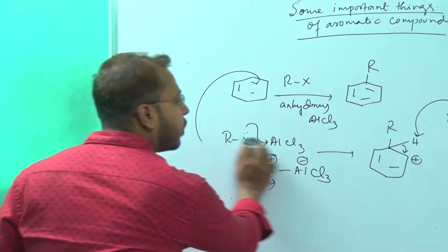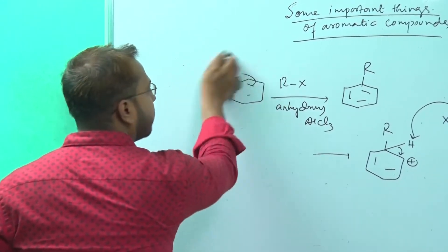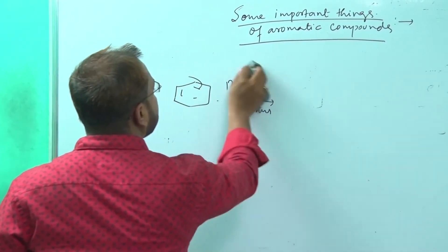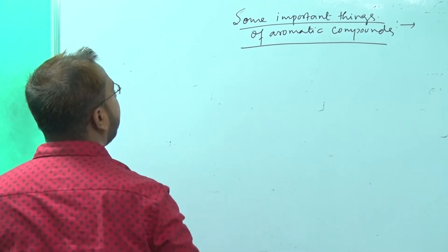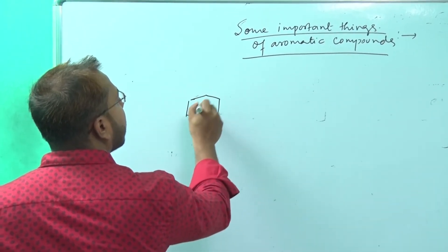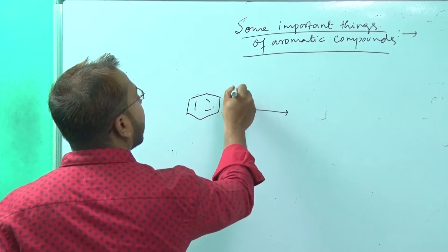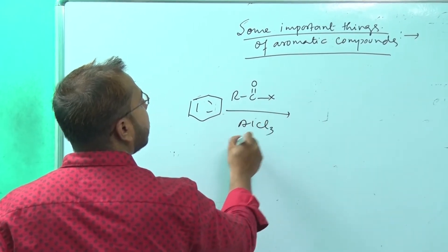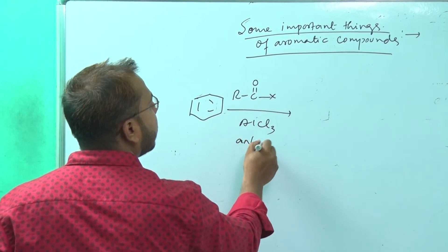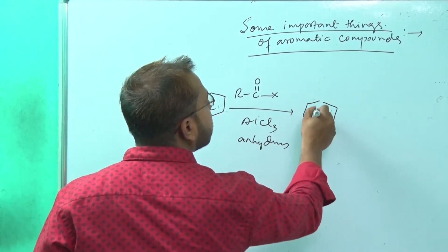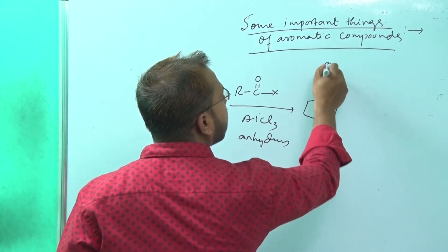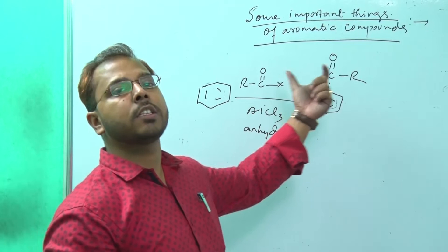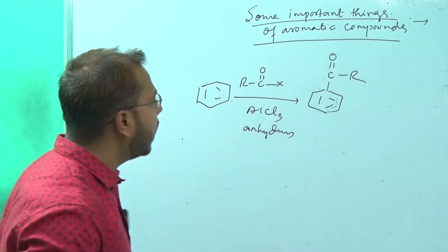Now let's come to Friedel-Crafts acylation and compare which method is better. In Friedel-Crafts acylation, we have a benzene ring, RCOCl, and anhydrous AlCl3. The product formed contains a COR (acyl) group, and so it is known as Friedel-Crafts acylation.